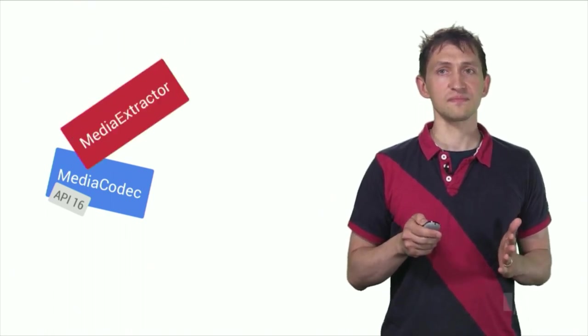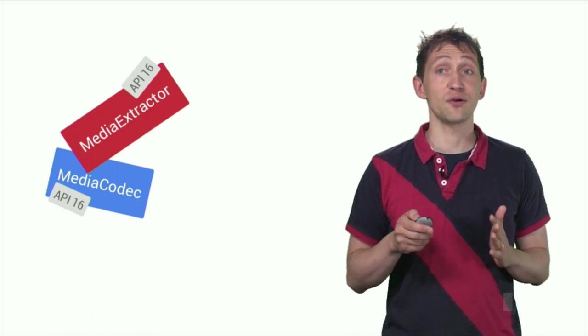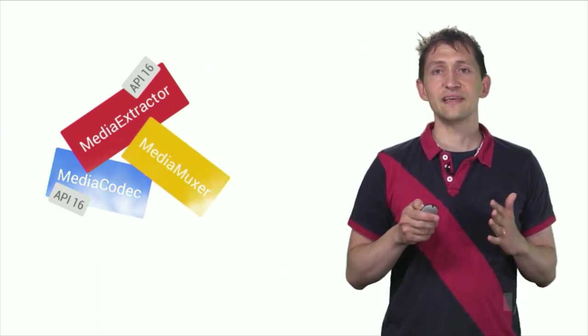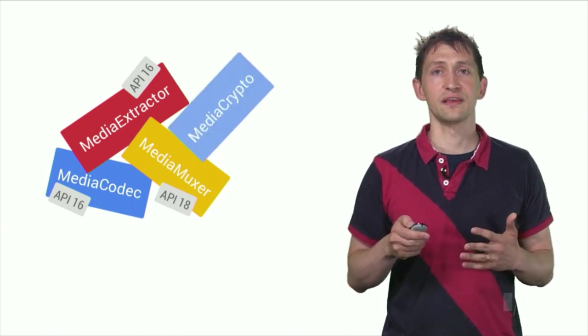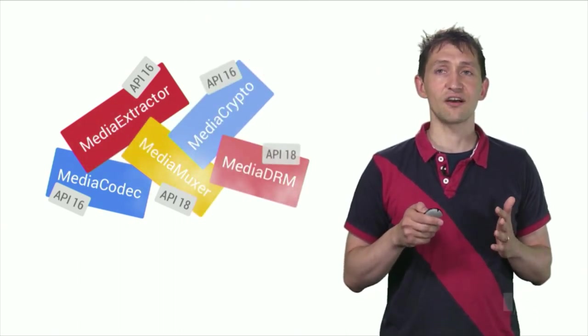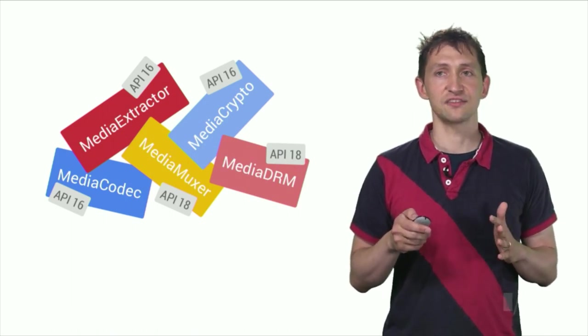They consist of the Media Codec that is used to both decode compressed audio and video, and to encode raw audio and video. Media Extractor parses Media Container files into audio and video packets. Conversely, Media Muxer packages audio and video packets into a Media Container. Media Crypto and Media DRM are used to decrypt protected media content and to manage the digital rights.